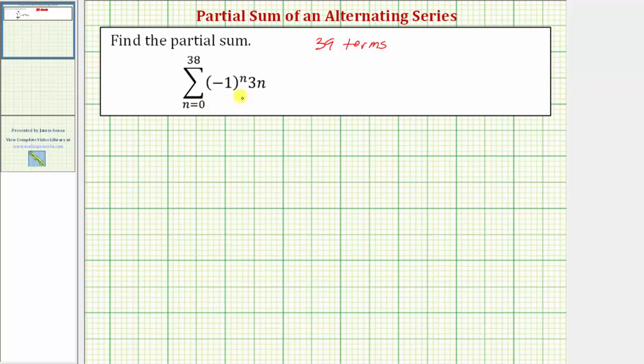But looking at our formula, let's go ahead and factor out this three to simplify the expansion of the series. We can write this as three times the sum from n equals zero to n equals 38 of negative one raised to the power of n times n. We did not take advantage of this property in the previous example, but this time let's see how by factoring this three out, it simplifies the partial sum.